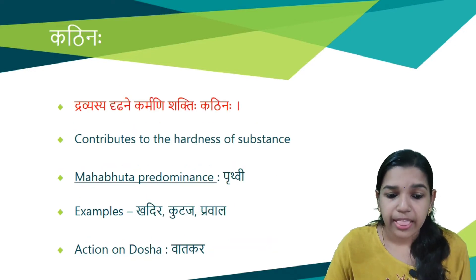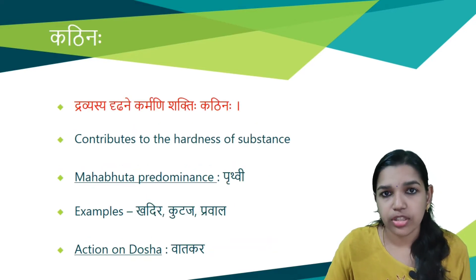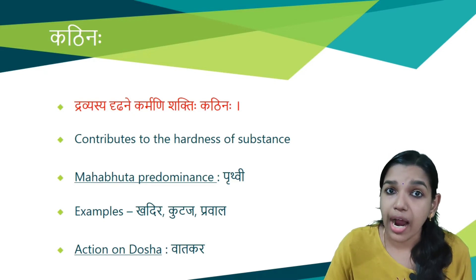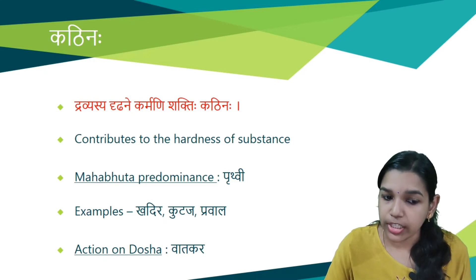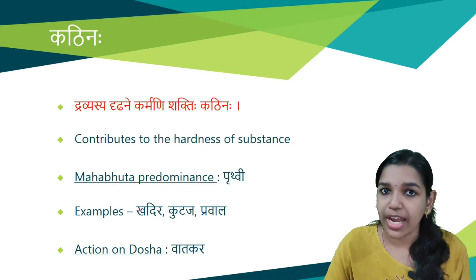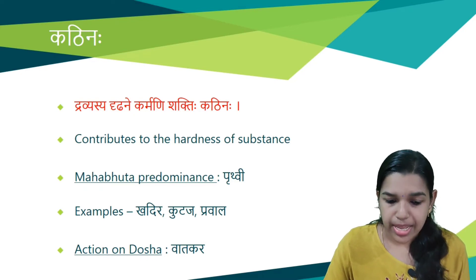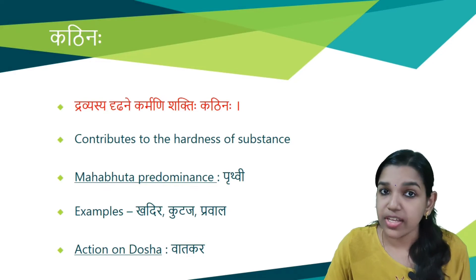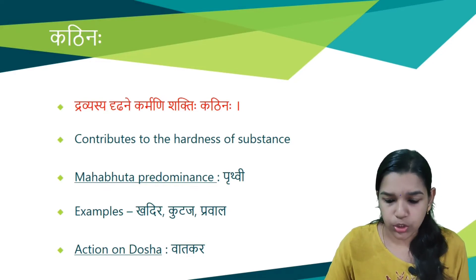Next is Kathina guna. Dravyasya dridhane karmani shakti hi kathina ha. That which contributes to the hardness of a substance is called Kathina. Prithvi is the predominant Mahabhuta. Examples of dravyas having kathina guna are khadira, kutaja, and pravala. The action contributed by these dravyas is vata kara, that is it increases the vata dosha.